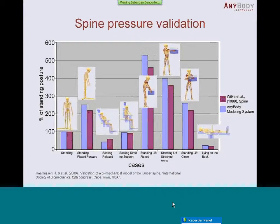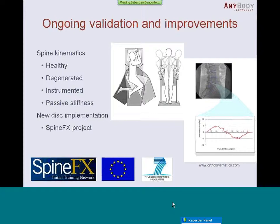Both the passive stiffness and the active part of the model are validated with these approaches. But of course we have never finished doing validation. Therefore we have some ongoing validation and improvement activities, some heading directly to spine kinematics. We are investigating healthy, degenerated, and instrumented spines, using in vivo data from a company called OsKinematics, which does very novel measurements on spine kinematics. We are also putting work into a new disc formulation, mainly sponsored by the SpineFX project. For more information about SpineFX, visit SpineFX.eu. We will use experimental data to create a new disc implementation, and this work will be coming in the next six months.